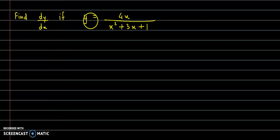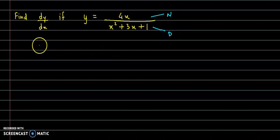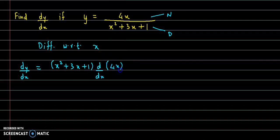Find dy by dx if y is equal to 4x upon x square plus 3x plus 1. Here we will use the quotient rule. This is the numerator and this is our denominator. So differentiating with respect to x, we have dy by dx is equal to: first the denominator, that is x square plus 3x plus 1, into derivative of numerator, that is derivative of 4x, minus then numerator, that is 4x, into derivative of denominator.